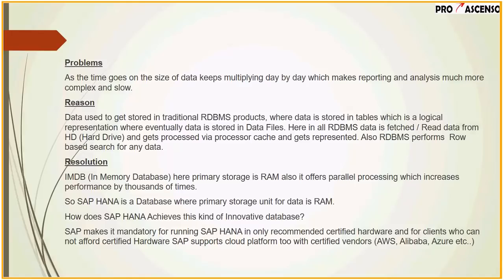Most people will have a question: if data is stored in memory, what happens if there is a power failure or the system goes down? We know that data in memory is volatile — the moment the system goes down, all data from memory is gone. But remember, the primary storage of data is RAM; it is not the only source. Technically, a copy of data is also stored on hard disk, which we call persistent storage. Our HANA database also has facilities like backup, recovery, disaster recovery, and high availability — which means HANA can be used as a full-fledged database.